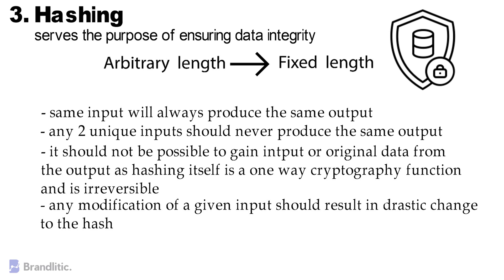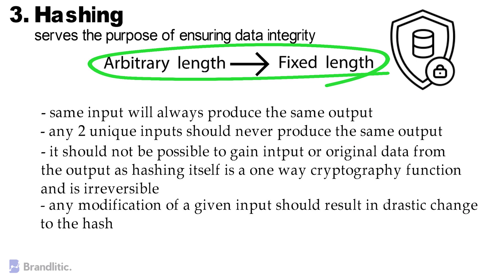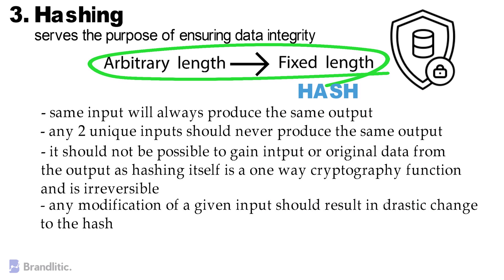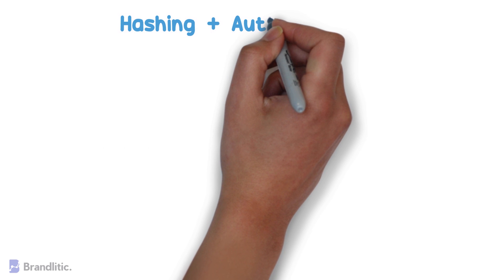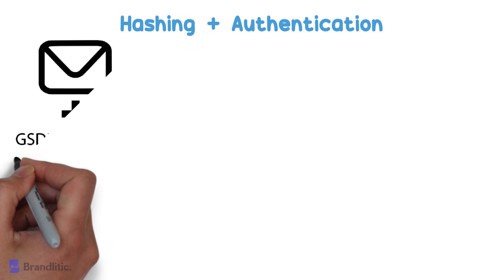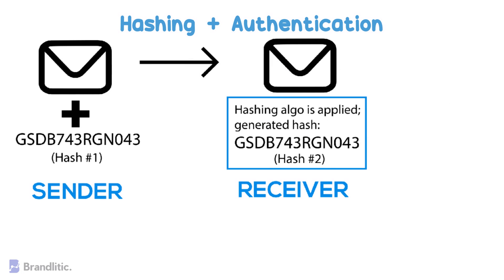Further, hashing transforms a string of characters into a value of fixed length. This generated value is called a hash. As a concept, hashing is used in conjunction with authentication to provide strong evidence that a given message has not been modified. When a message is sent, a hash of the message is also sent along with it, and at the receiving end, the same hashing algorithm is applied to generate a hash.